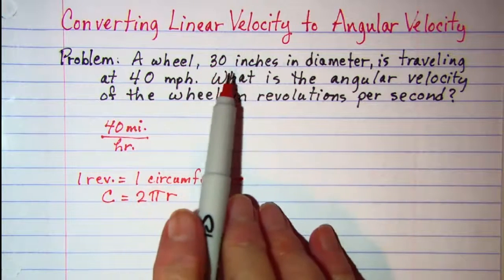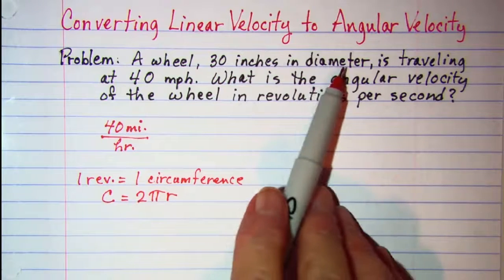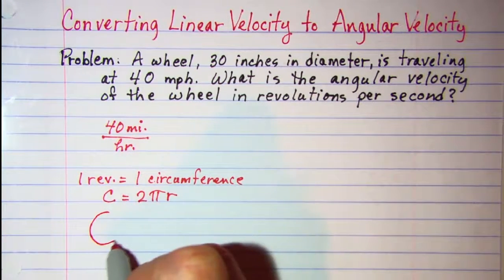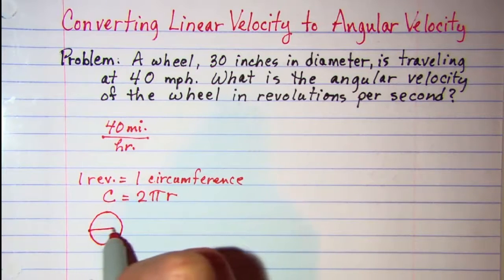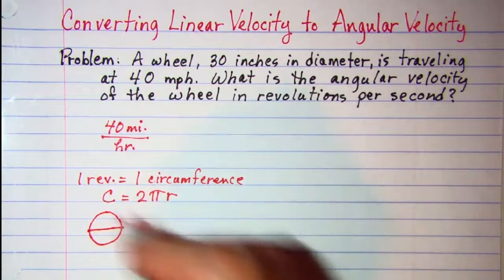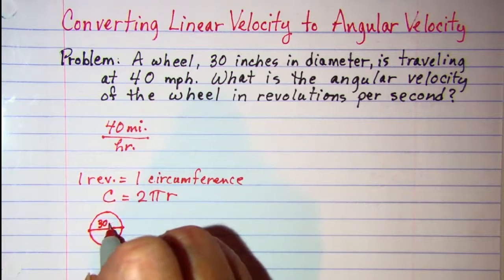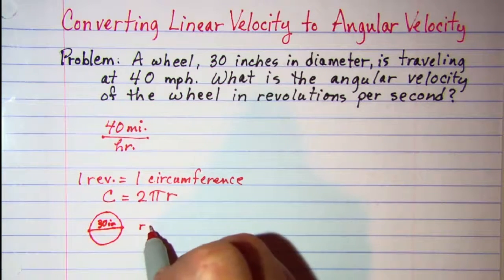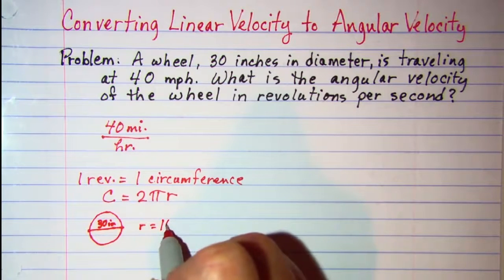Now if we have a wheel that's 30 inches in diameter, that means that all the way across is 30 inches. So our radius is going to be 15 inches.